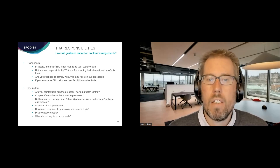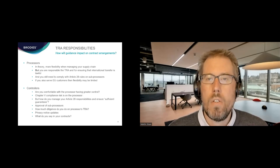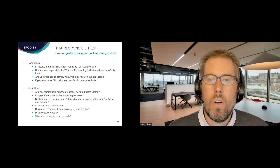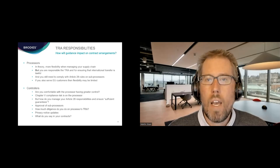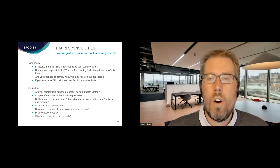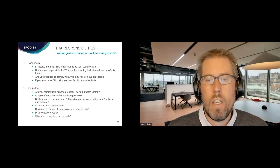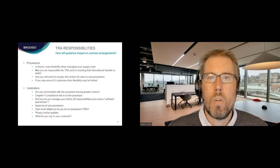You still have the ability to object to sub-processors — think carefully about how that applies to international transfers. How much diligence do you do on the processor's TRA? They provide a TRA and say they've done the work — what questions do you need to ask? You also need to think about privacy notices: international transfers must be covered in your privacy notice, responsibility for which sits with the controller. How do you ensure oversight and keep the privacy notice up to date when you don't have direct control over those transfers? All of this raises questions for contract drafting and how we manage risk.